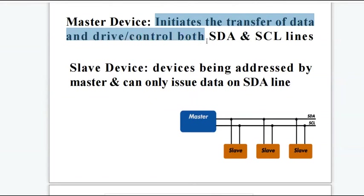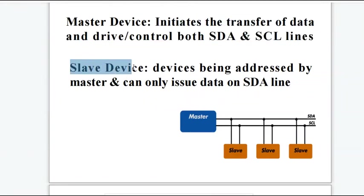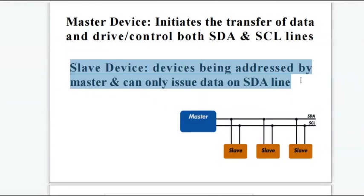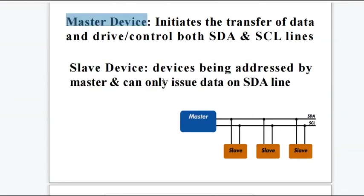The master device drives or controls both the SDA and SCL lines. The slave device is a device which is addressed by the master and can only issue data on the SDA line. In the earlier interfacing diagram, the master is the microcontroller or microprocessor, and the slaves are devices such as sensors or memories.